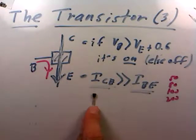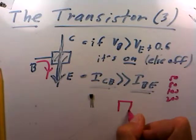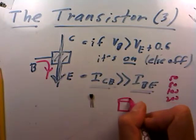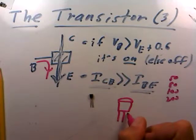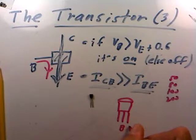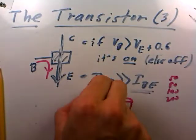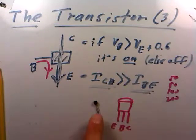We have this transistor in a small form factor. If you want to identify the pins, do a Google search and look for an orientation guide. When the flat face is oriented towards you, the middle lead is always going to be the base, the lead on the left is the emitter, and the lead on the right is the collector.